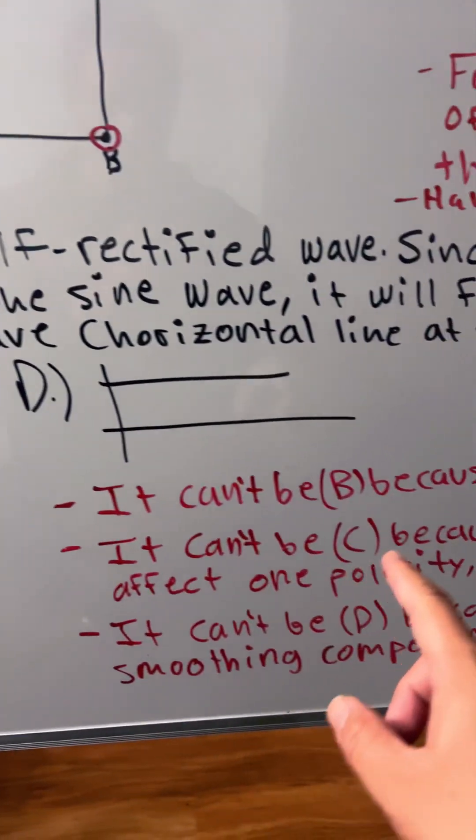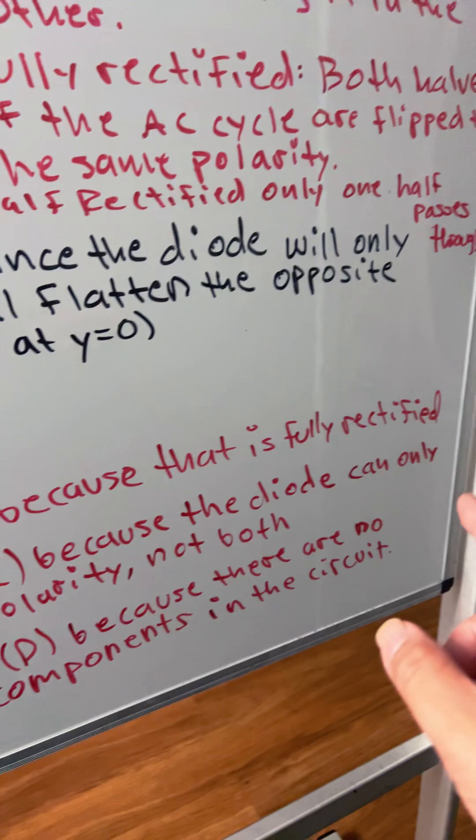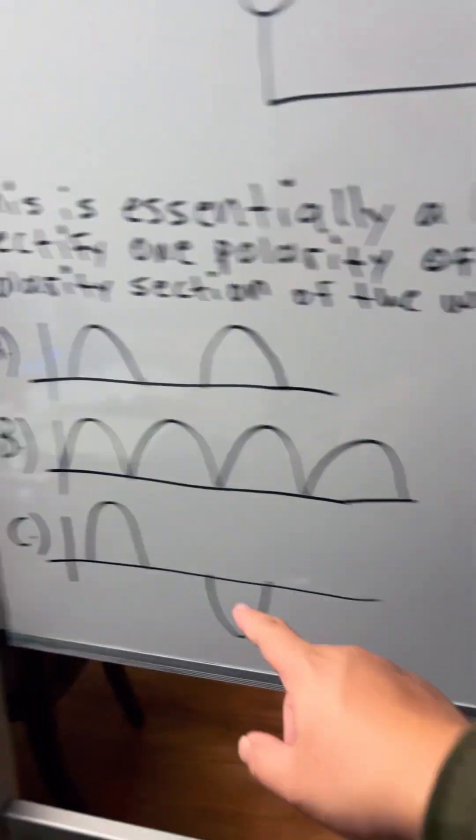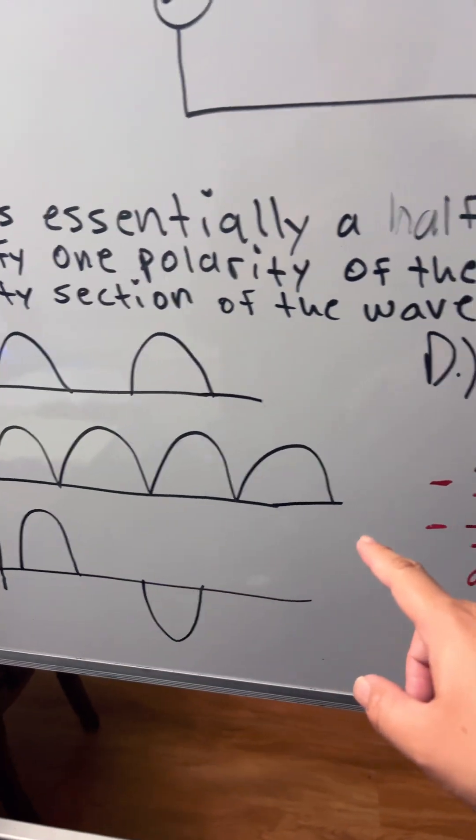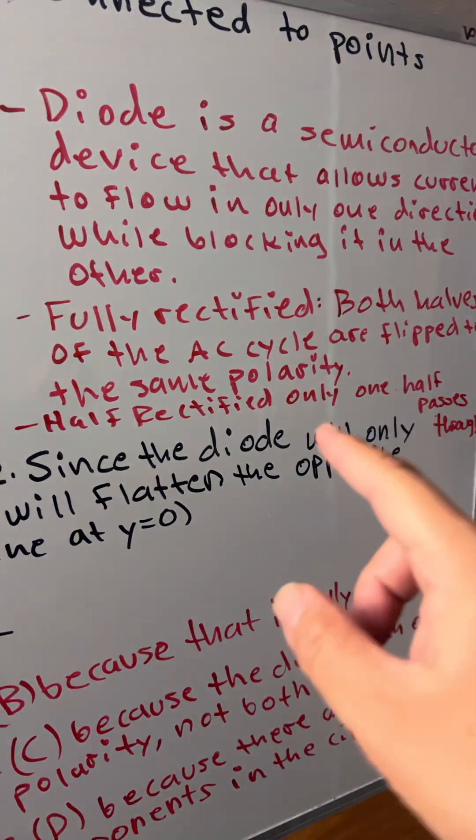It can't be B because that is a fully rectified wave. Both halves of the AC cycle are flipped to the same polarity.